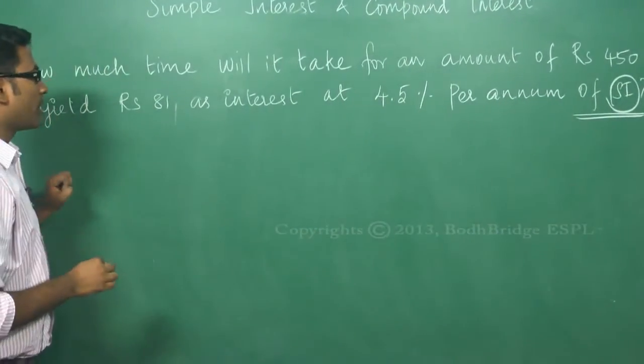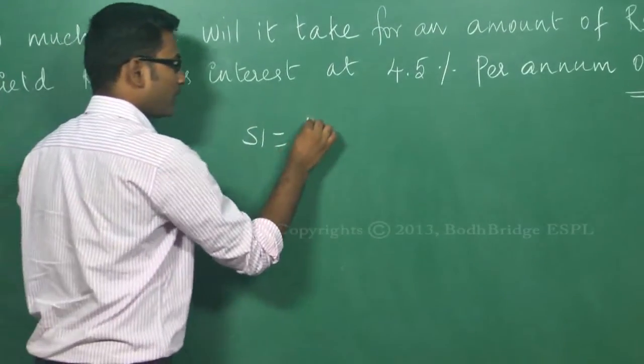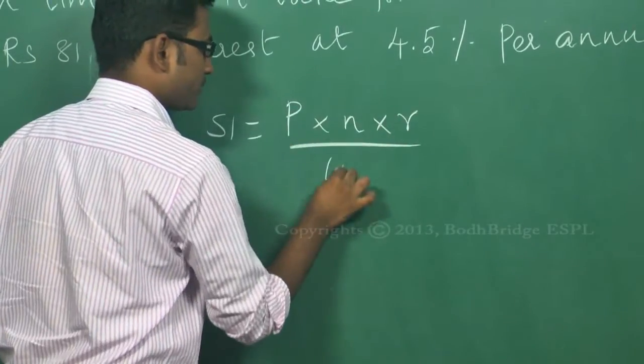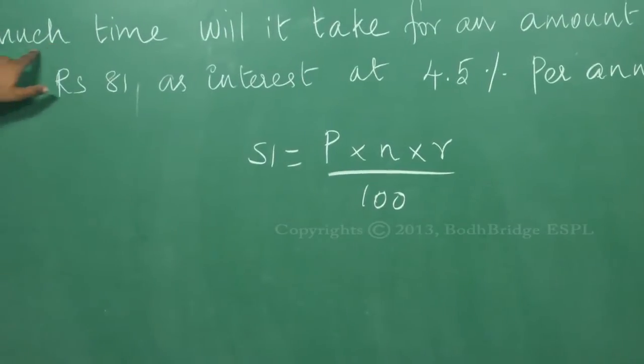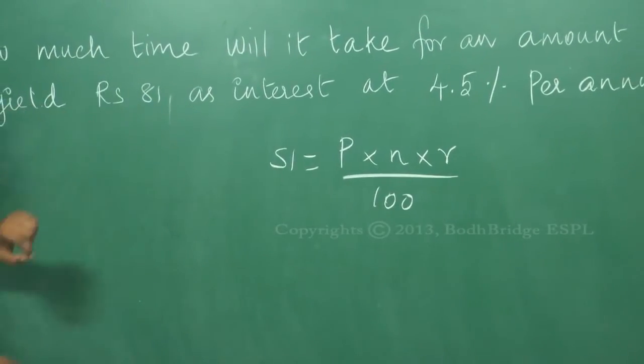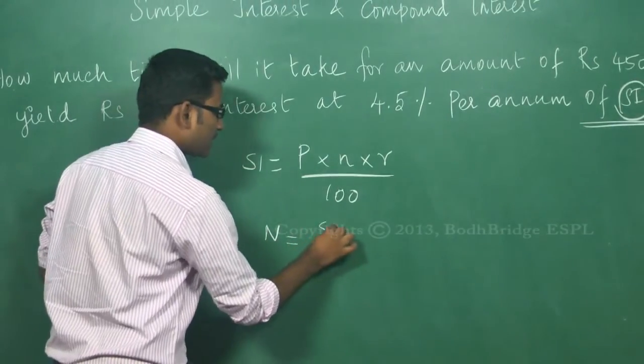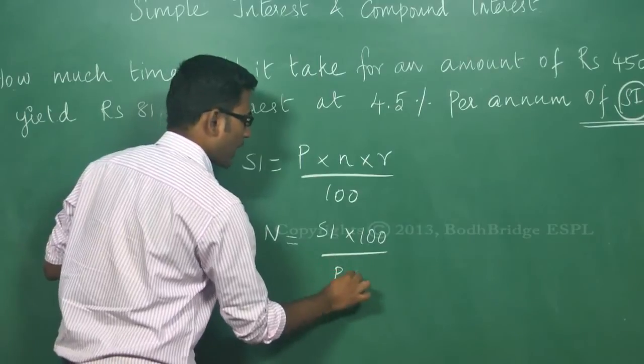So what is the formula for SI? SI is equal to P into N into R by 100. Now they are asking how much time? We need to find the number of years. So number of years formula is given by SI into 100 by P into R.